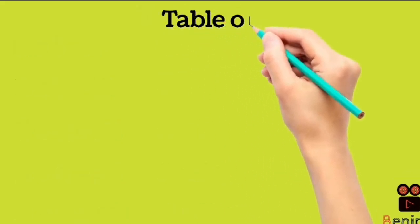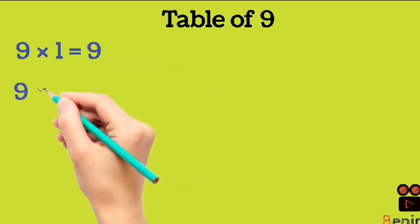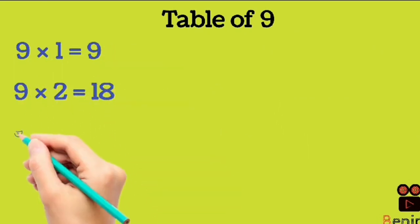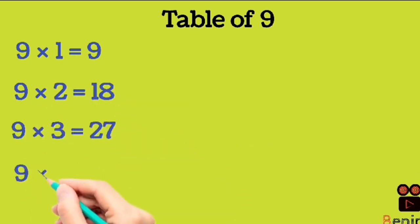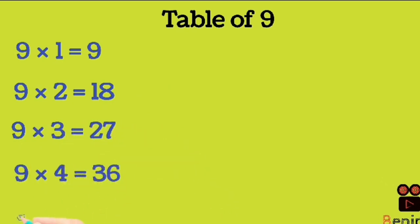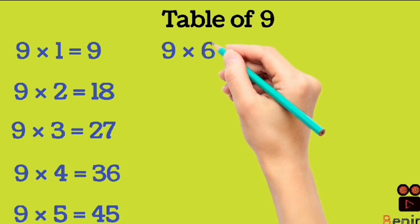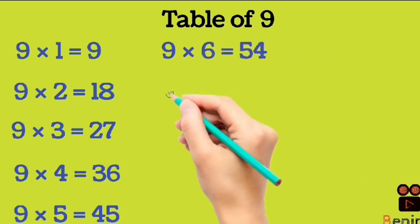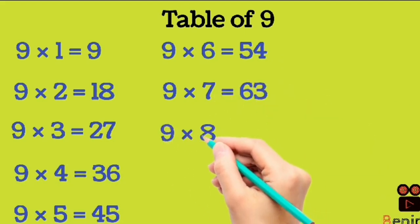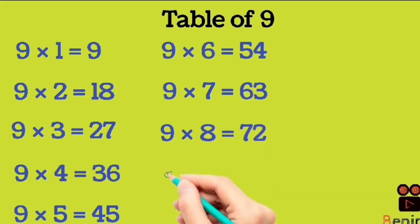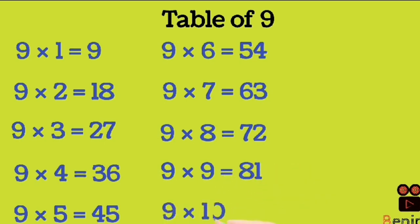Table of 9. 9 1s are 9. 9 2s are 18. 9 3s are 27. 9 4s are 36. 9 5s are 45. 9 6s are 54. 9 7s are 63. 9 8s are 72. 9 9s are 81. 9 10s are 90.